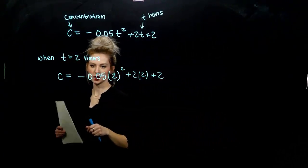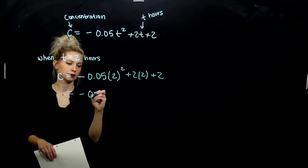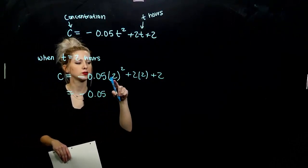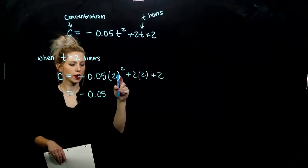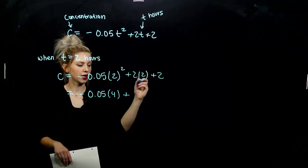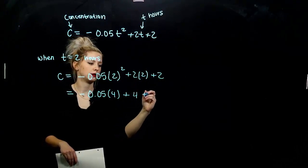So many twos. So, please excuse my dear Aunt Sally. What has to happen first? Inside of the parentheses, we can't simplify, so we need to do the exponent. 2 squared gives me 4. And we can evaluate these. I've got 4 plus 2.